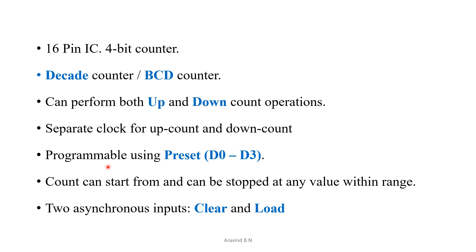It can perform both up counting and down counting operations. For up counting a separate clock is used, and for down counting a separate clock is used. It is programmable — we can set from where the counting operation starts. For example, if you want to start from 3, you can use the preset inputs D0 to D3, set that value to 3, and the count will continue from 3 onwards in a loop. There are also two asynchronous inputs: clear and load. The clear signal sets the output equal to 0.